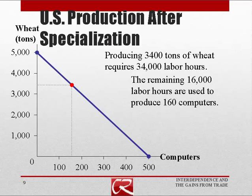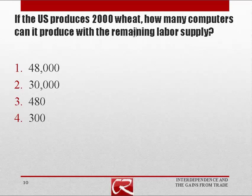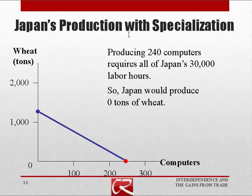Now each country will specialize — we'll explain why each specializes in a particular good in a later segment. The U.S. partially specializes in wheat, shifting up and to the left on the PPF, producing 3,400 wheat and 160 computers. Japan entirely specializes in computers, reducing wheat production to zero and putting all 30,000 labor hours into computers, producing 240 computers and zero tons of wheat.